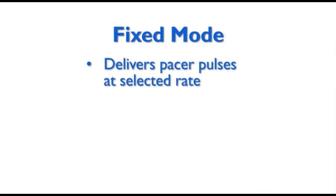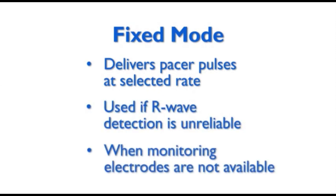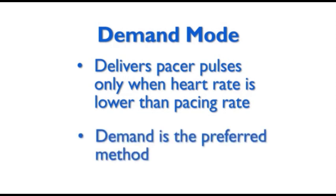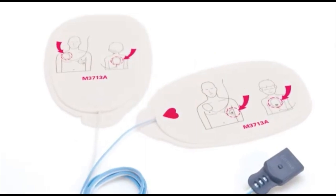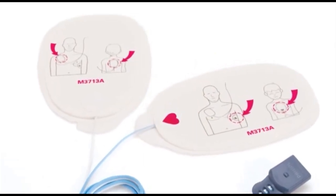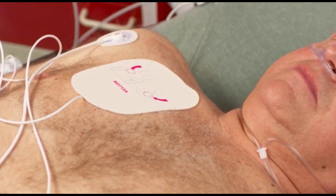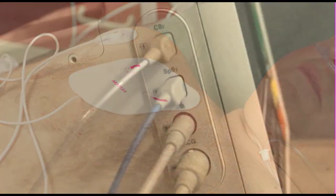In fixed rate mode, the pace rate is set by the clinician regardless of the patient's intrinsic heart rate. This option is preferable when the ECG signal becomes extremely noisy due to motion artifact or when the pacemaker is sometimes unable to sense the intrinsic beat. Another reason for using fixed rate mode is to terminate tachyarrhythmia by overdriving the patient's intrinsic beat. This method has been successful in a limited number of patients.